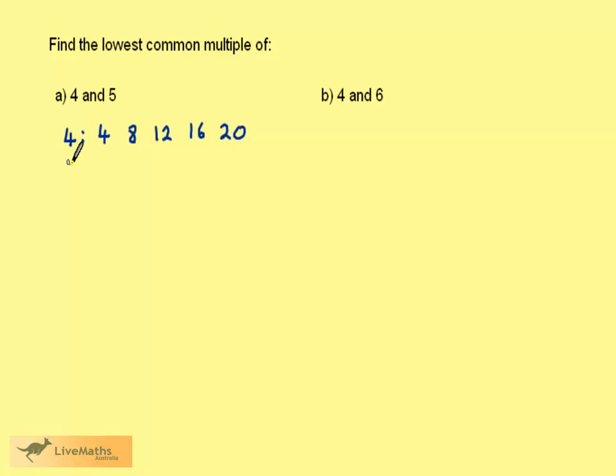Once I've done that, I go to the other number and write down its times table. The first number that appears in both lists is the lowest common multiple. So the lowest common multiple of 4 and 5 is 20.